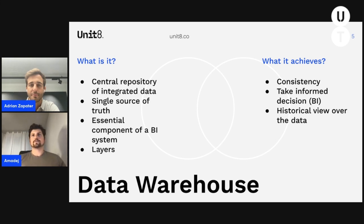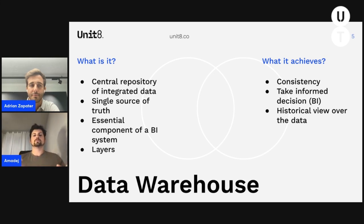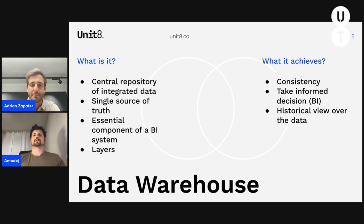What does a data warehouse achieve? It achieves consistency of the data. If we have a sales team, marketing team, and finance team, for example, they could have different sorts of data from different sources and their numbers don't always add up. We need a consistent single source of truth where we can really rely on that data — and this is exactly what a data warehouse does for us.